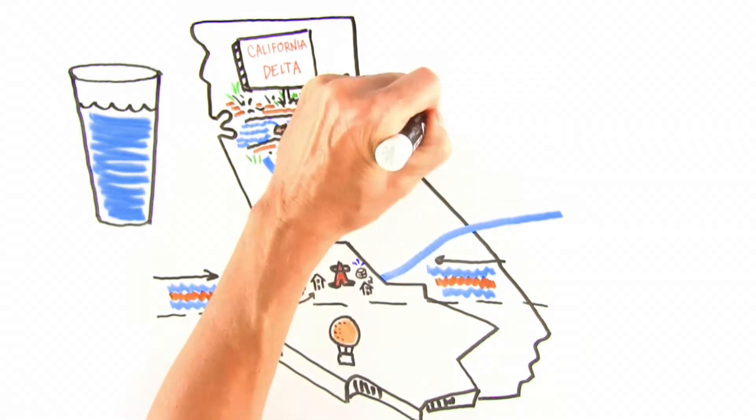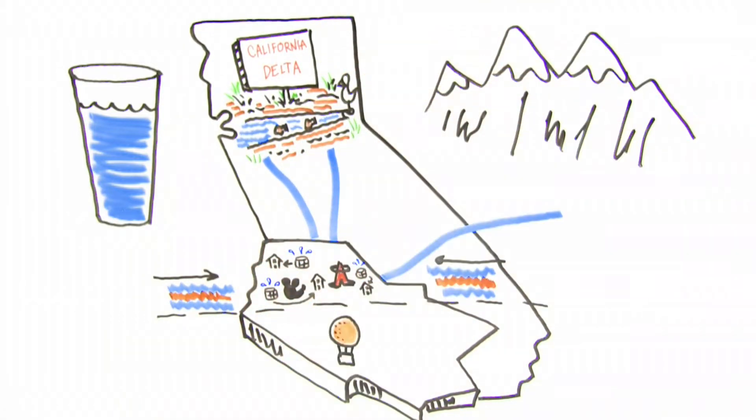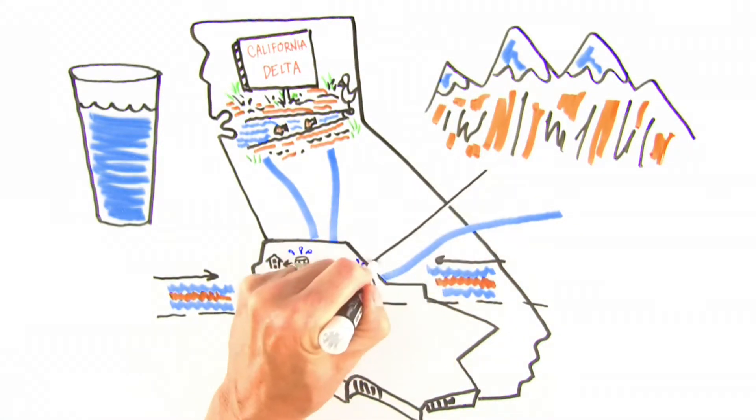That's why the Sierra Nevada snowpack is important. The snow is nature's reservoir in the winter when water demands here are low, and then flows through the State Water Project to Southern California as it melts.